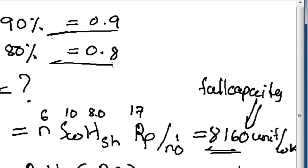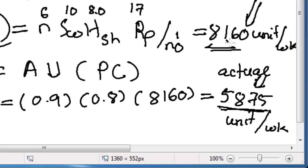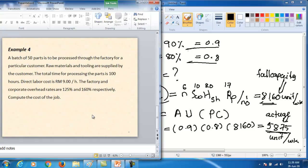So availability and utilization affect the production capacity. In reality we cannot get full 100% capacity output. Due to availability and utilization effects, the actual output of 5,875 units is less than the full capacity of 8,160 units.